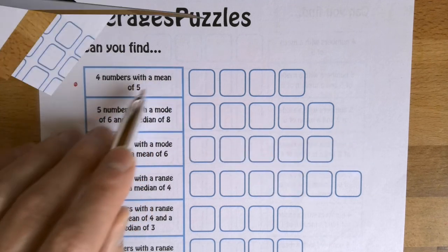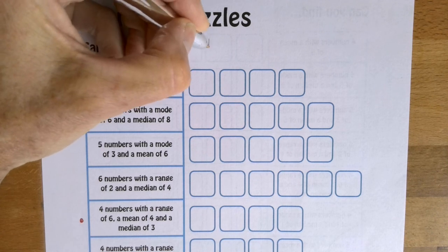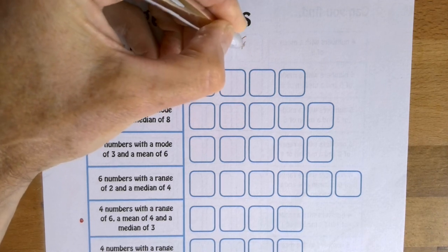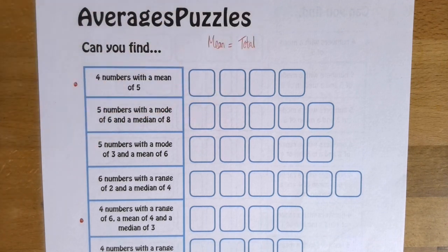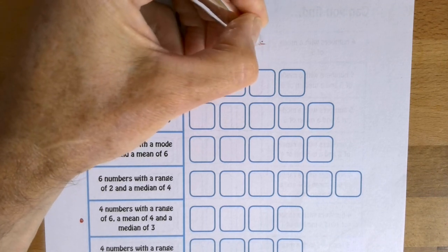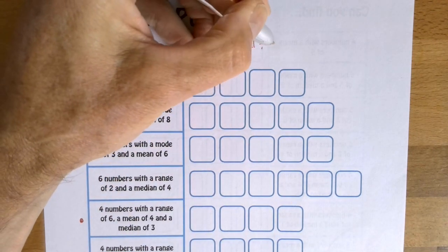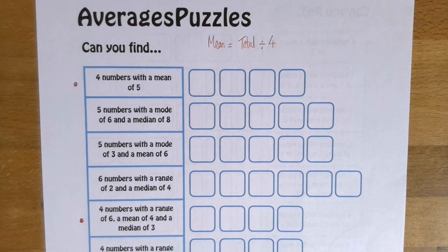We're asked to find four numbers with a mean of five. Now, can I just remind you how you work out the mean. To find the mean, you add up all the numbers. So you add them up and find the total, and then you divide by how many numbers there are. And in this case, there are one, two, three, four numbers.